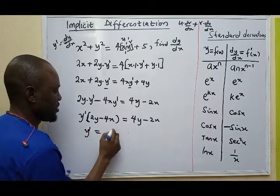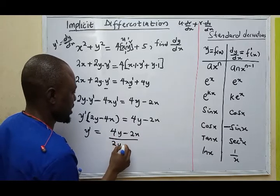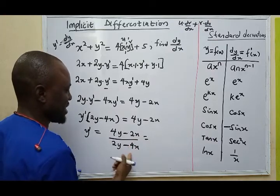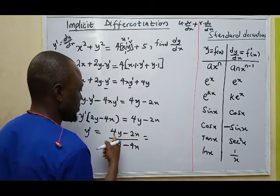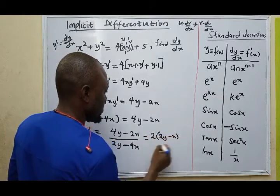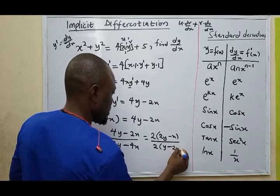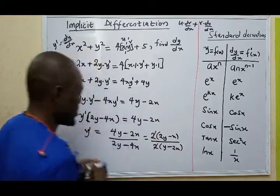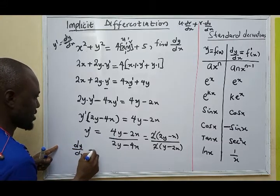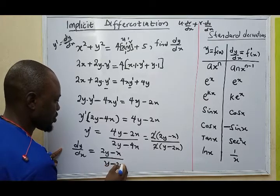Y prime would be 2y minus 4x equal 4y minus 2x. I'll divide through by this. So y prime would be 4y minus 2x over 2y minus 4x. I can factor out what they have in common here. They have 2 in common. So here will be 2y minus x over 2 bracket y minus 2x. Let's cancel this. So y prime, dy/dx, will be 2y minus x over y minus 2x. This is my derivative using implicit differentiation.